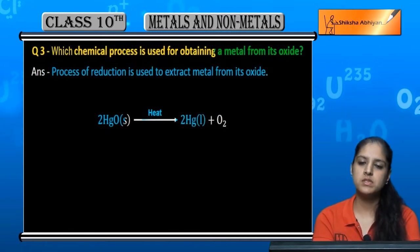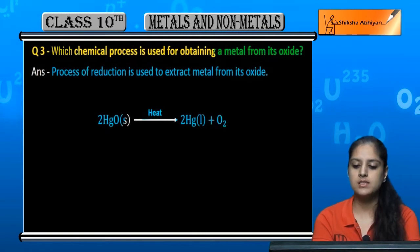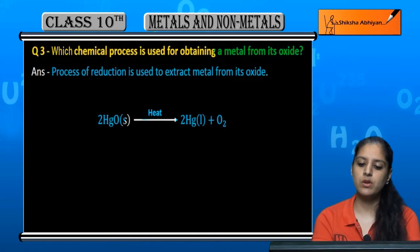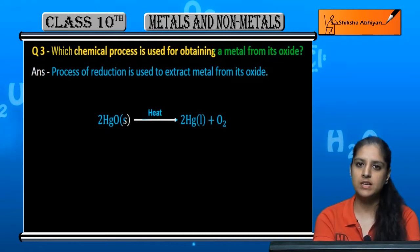The oxygen from HgO is removed and we extract it. HgO becomes mercury, from its oxide to mercury metal.